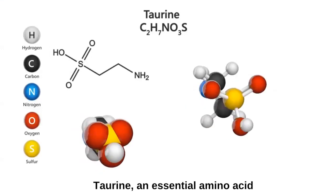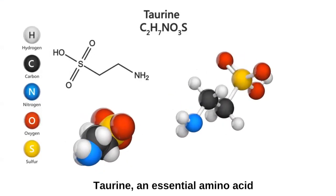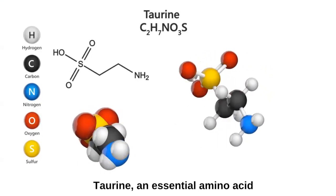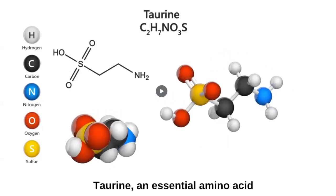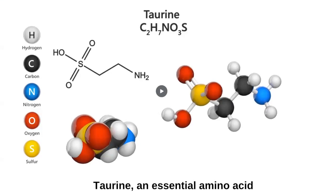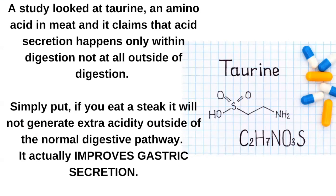I wanted to talk about the role of food, because people might think that food is quite passive - you eat it and then the body acts on it. But it's a two-way process. Looking at just one amino acid in food, taurine: once it's in the system it signals back to the body. In interventional studies they've taken taurine out then put it back in, seeing the difference in secretions in the stomach.